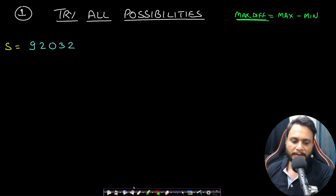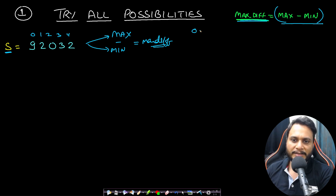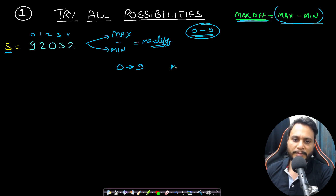We will look at two approaches. The first approach is trying all possibilities. Given number s, the max difference is produced by generating the max number and the min number and taking their difference. Since there are only 10 digits (0–9), we try converting each digit to 9 to generate the maximum. For example, converting all 0s to 9 gives 92932, so max is updated to 92932.